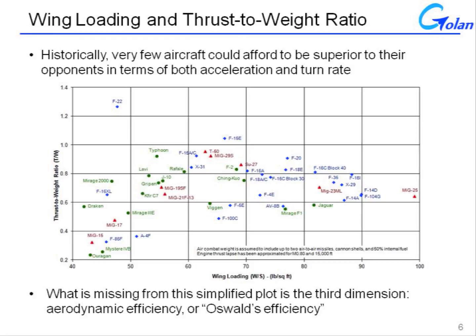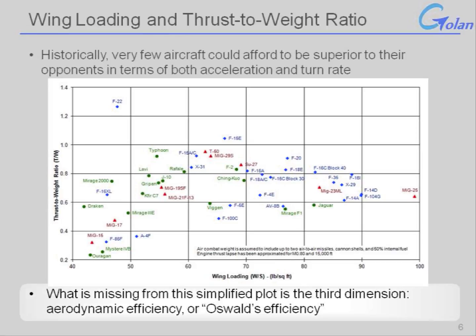Sustained turn rate is more complicated because it depends on both thrust-to-weight ratio and wing loading. But what is missing from this simplified assessment is the Oswald's efficiency — the aerodynamic efficiency. So there is another dimension to this plot; you can think of it as a vertical dimension out of the page, and that dimension is not fully captured in this particular relationship.